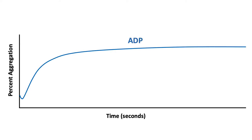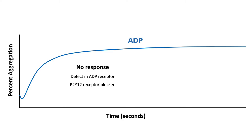The platelet aggregation response to ADP shows an initial wave of primary aggregation demonstrated by the initial downward inflection, then follows a secondary wave of aggregation which requires release of platelet intracellular granules. No response to ADP may indicate a defect or absence of the ADP receptor, or use of a P2Y12 receptor blocker like clopidogrel. ADP response may also be blocked with high concentrations of aspirin.